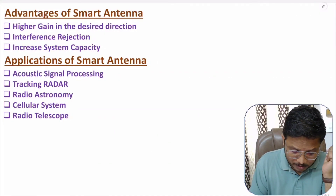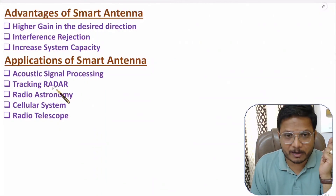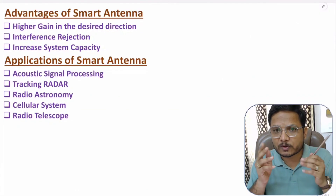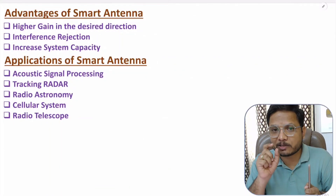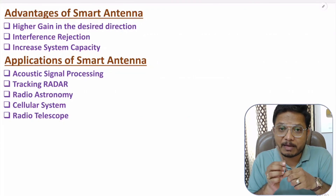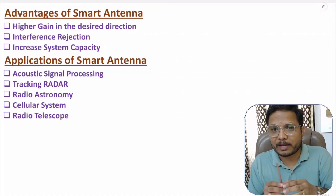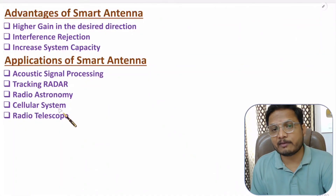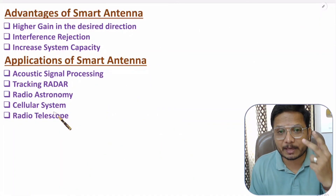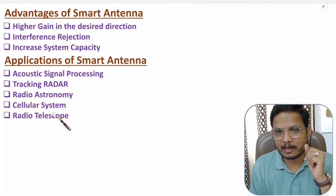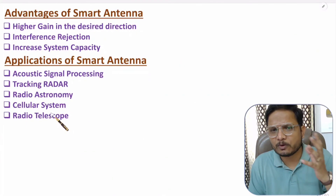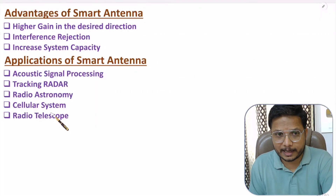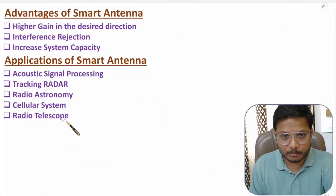Applications of smart antenna include acoustic signal processing and tracking radar. In tracking radar we need to track a target in motion, so we steer the beam along with the target's motion by changing the phase shift, which is controlled by the DSP processor — this allows tracking with higher accuracy. Smart antenna is also used in radio astronomy, cellular systems — where focusing on users gives higher capacity and avoids interferers — and in radio telescopes.